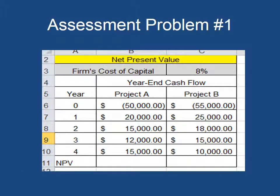This is your first assessment problem. You're only going to have two problems this week, and you'll need to set this up in Excel. When that box pops up, it will ask you for the rate — the firm's cost of capital is 8%, so that's the rate you'll enter. Then for Project A, grab the first $50,000 value and drag it all the way down, and Excel will calculate the NPV for you. Start by putting your equal sign in the NPV cell, insert 8%, and add up the totals for both projects. Tell me which project — A or B — you would pick.